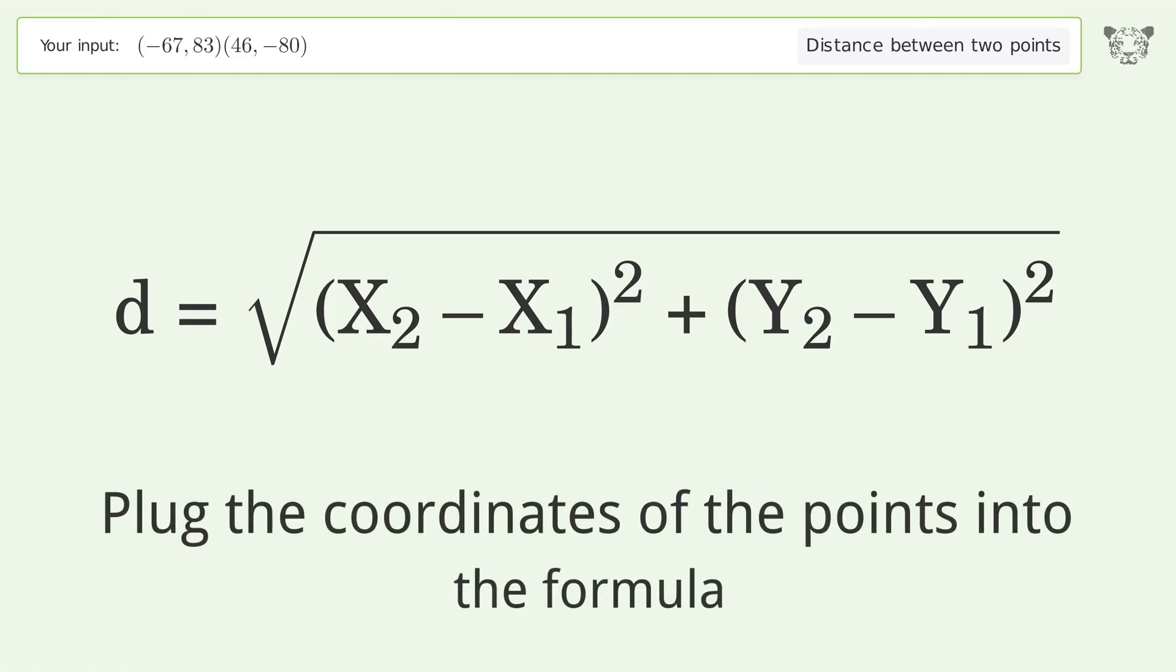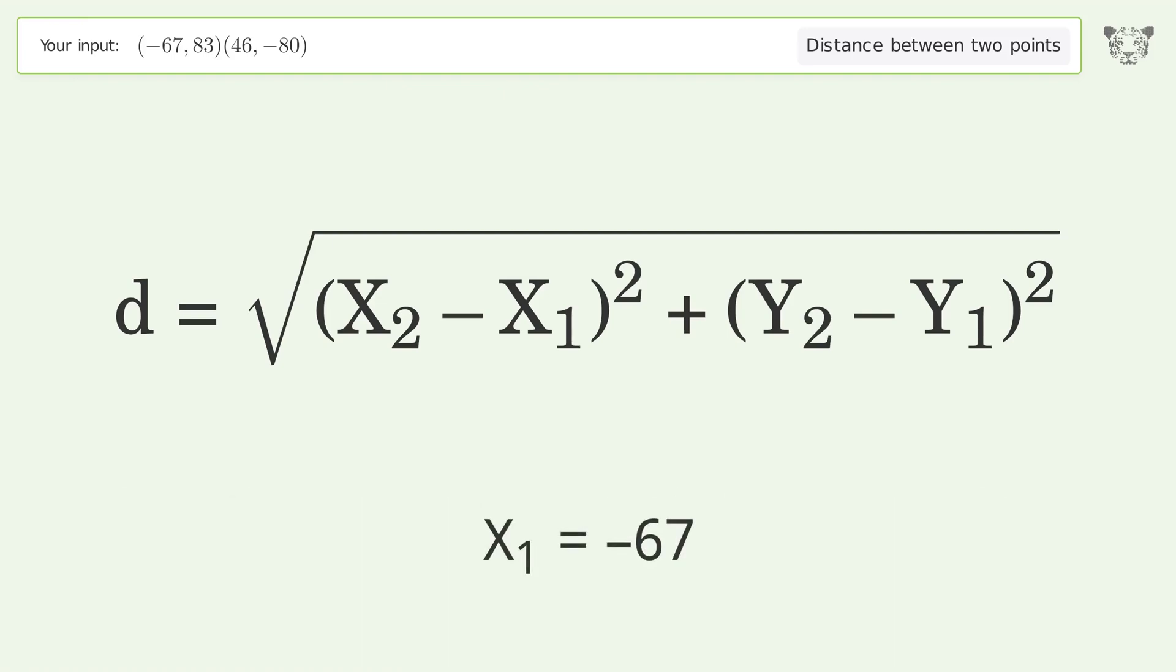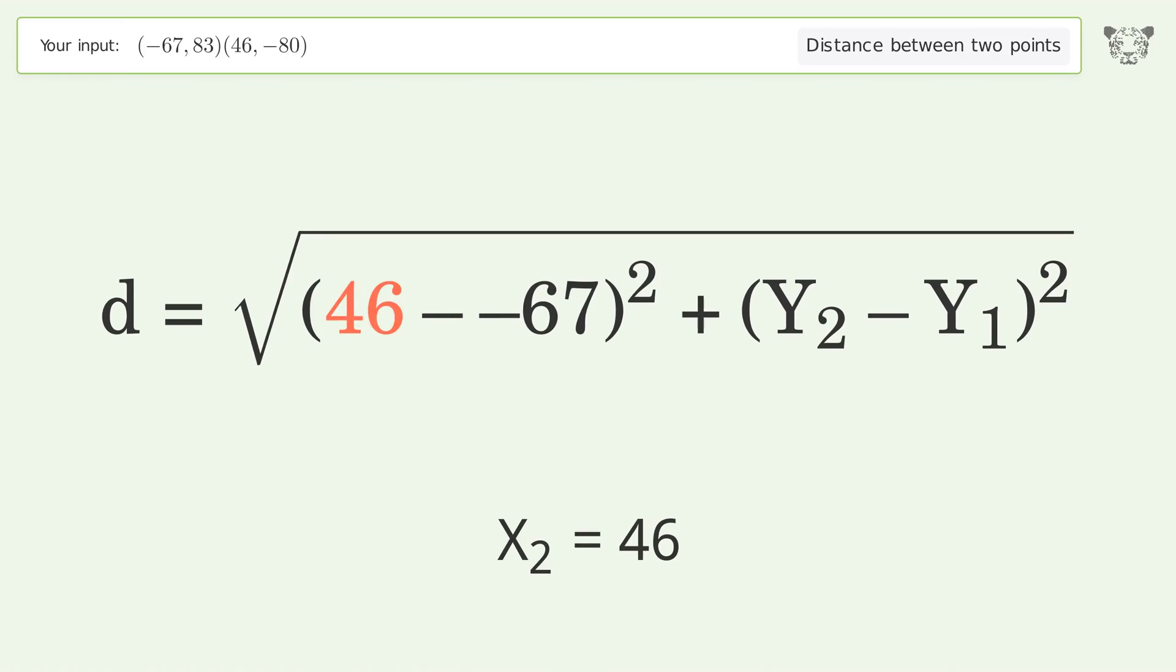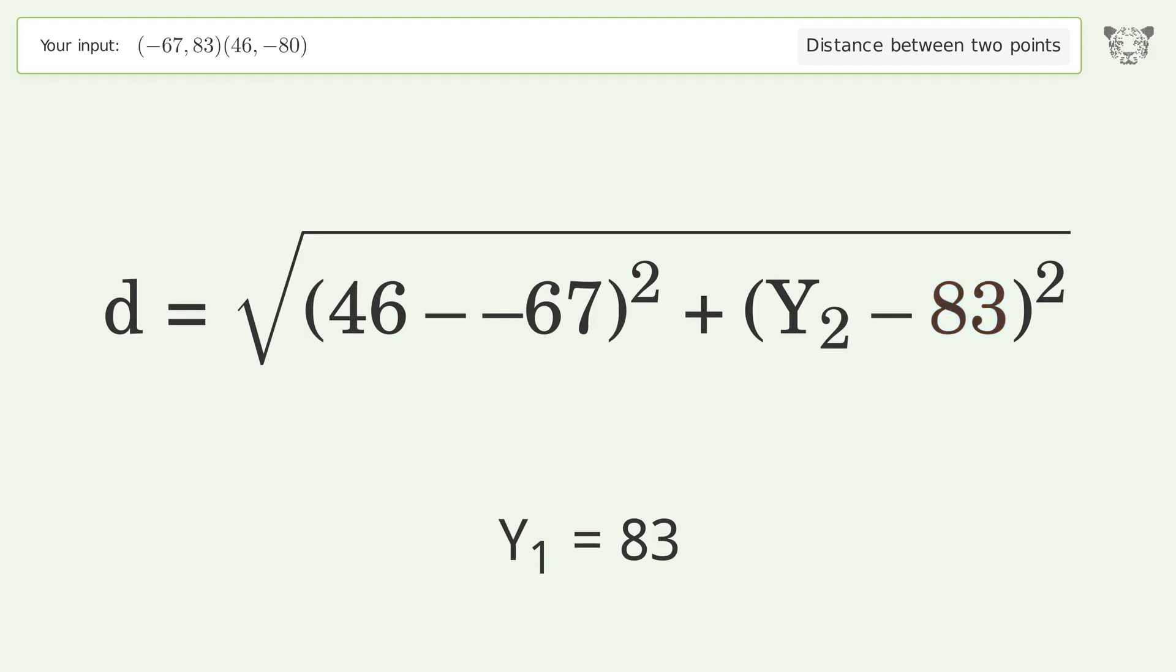Plug the coordinates of the points into the formula: x1 equals negative 67, x2 equals 46, y1 equals 83, y2 equals negative 80.